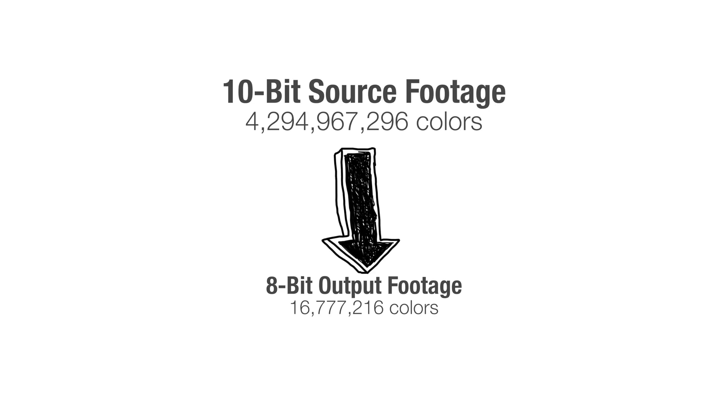Higher bit depths aren't actually useful for viewing because we can't visually take full advantage of all those colors, but they do have post-processing advantages. Higher bit depths give us more latitude in post-production for color grading. With higher bit depths we are pulling colors from a larger pool and then pushing them into a much smaller range. If you're a professional color grader, having a pool of over 1 billion colors to pull from can be very useful, even if the final video is published in 8-bit. You're able to really stretch those colors to fit different ranges in post-production without the image falling apart, as it usually does at lower color depths.